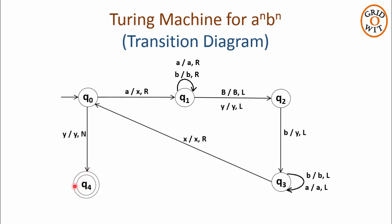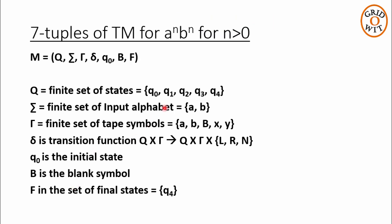Now let us see the 7-tuple for this Turing machine. We have 5 states: q0 to q4. Symbols a and b are in the input alphabet. Symbols a, b, blank, x, and y are tape symbols. The transition function has been discussed through the transition diagram. q0 is the initial state, capital B is the blank symbol, and the set of final states contains state q4.